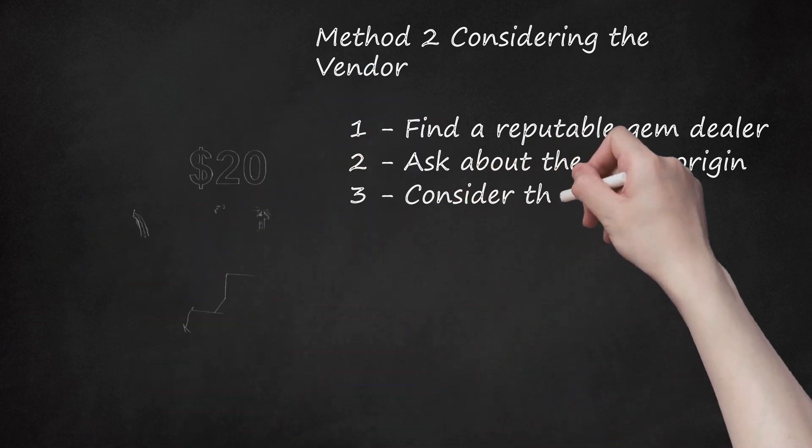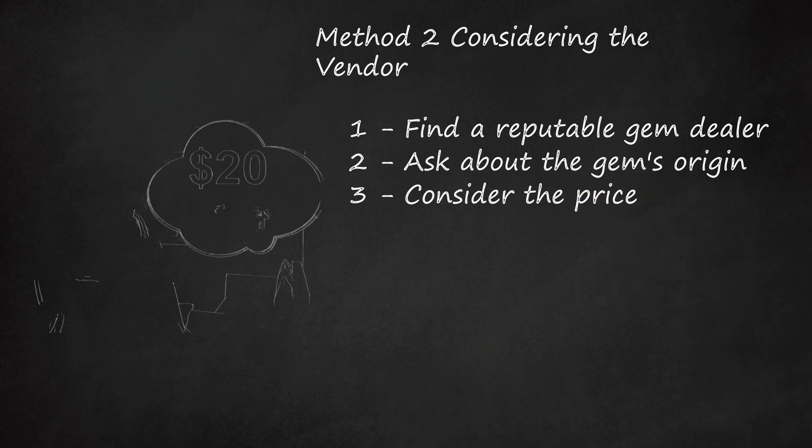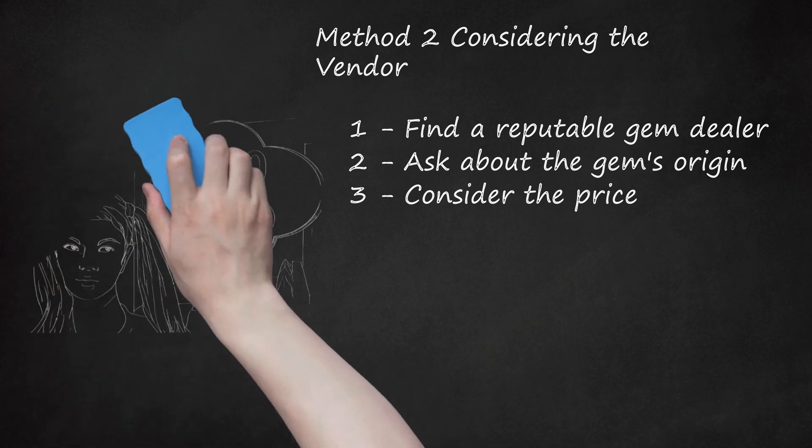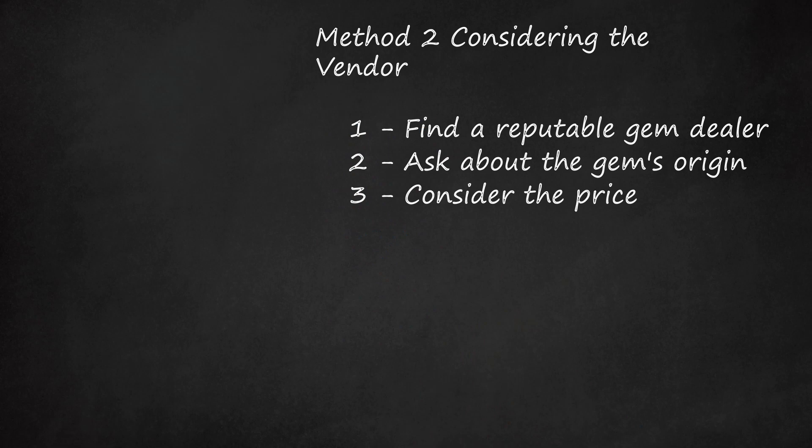3. Consider the Price. Amethyst is generally inexpensive. It's not uncommon to find amethyst jewelry for around $20. You should be suspicious of amethyst sold cheaper than this. Many vendors may market fake amethyst as authentic and then sell it well below market value. This is to trick consumers into thinking they're getting a deal. Follow the old adage, if it seems too good to be true, it probably is. Stay away from low-priced gemstone.